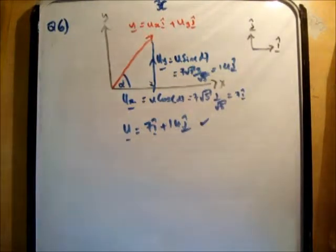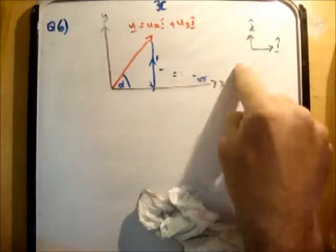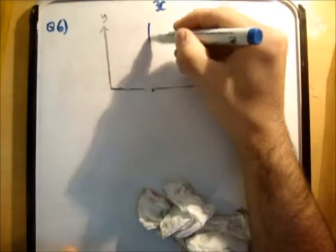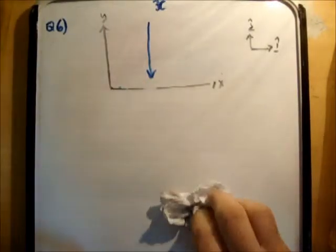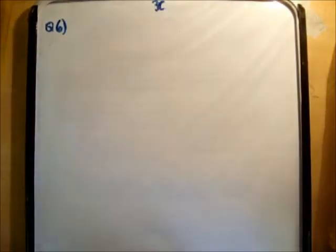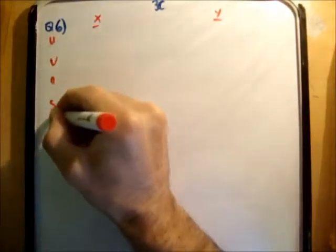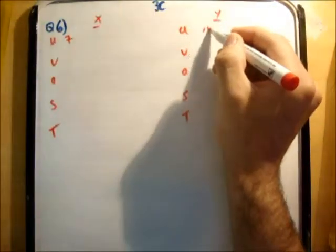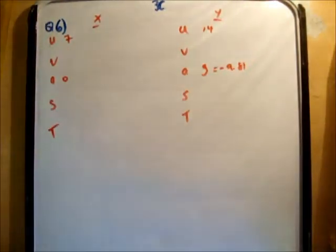Next we need to resolve gravity. Since we're working in the xy plane, gravity acts only in the negative y direction — it's already resolved and doesn't act in two directions. Setting up our table with x and y columns: u sub x is 7, u sub y is 14, acceleration in y is g equals negative 9.81, and acceleration in x is 0. Time is t.